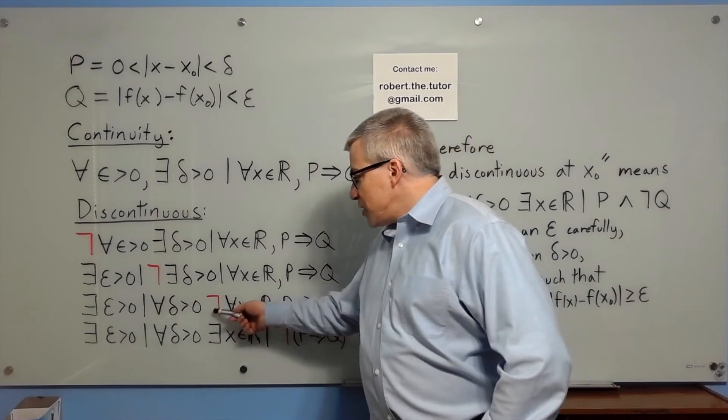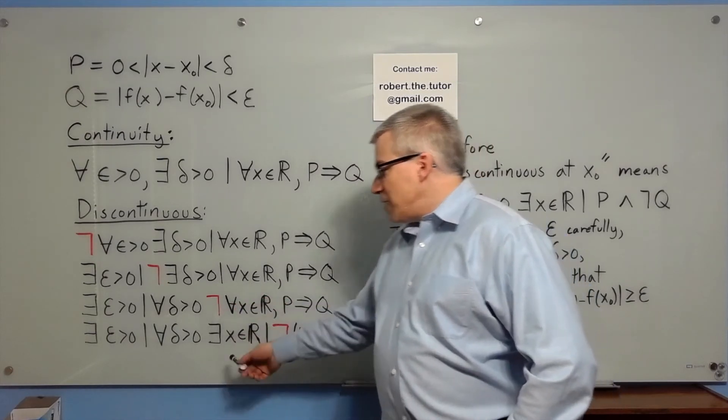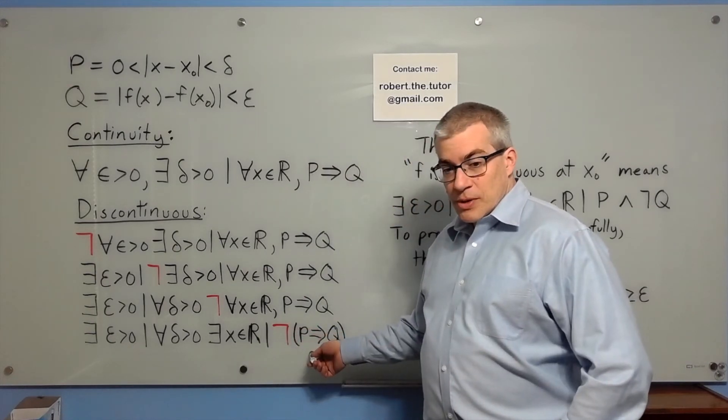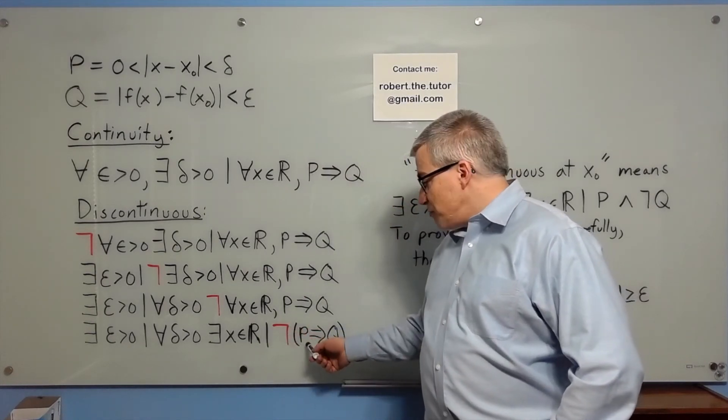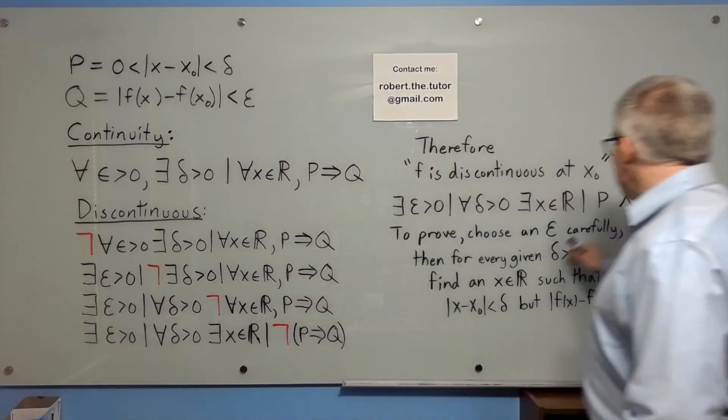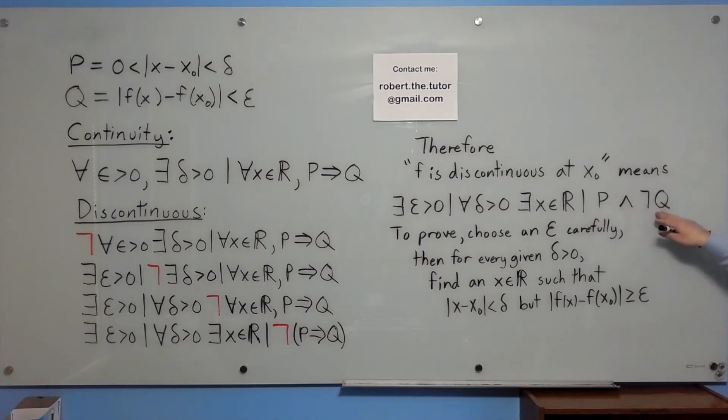If it is not true for all x, that means there exists an x such that this is not true. The negation of p implies q, the only way that p implies q can be wrong, is if p is true and q is false.